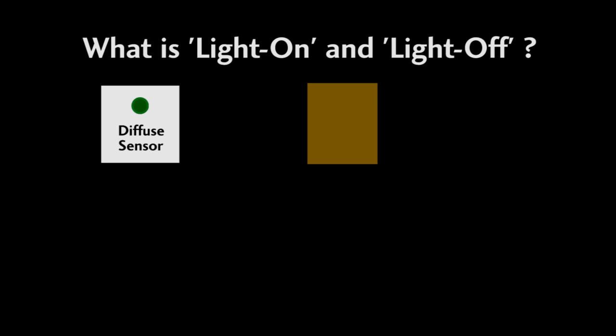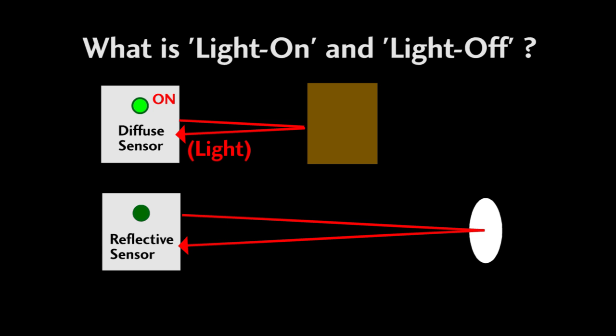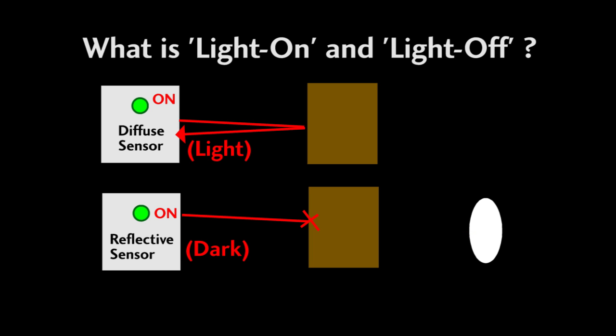A diffuse sensor is normally light-on since its output is on when its own light source is reflected from a target. Reflective and through beam sensors are normally dark-on since the output is active when the light beam is blocked.